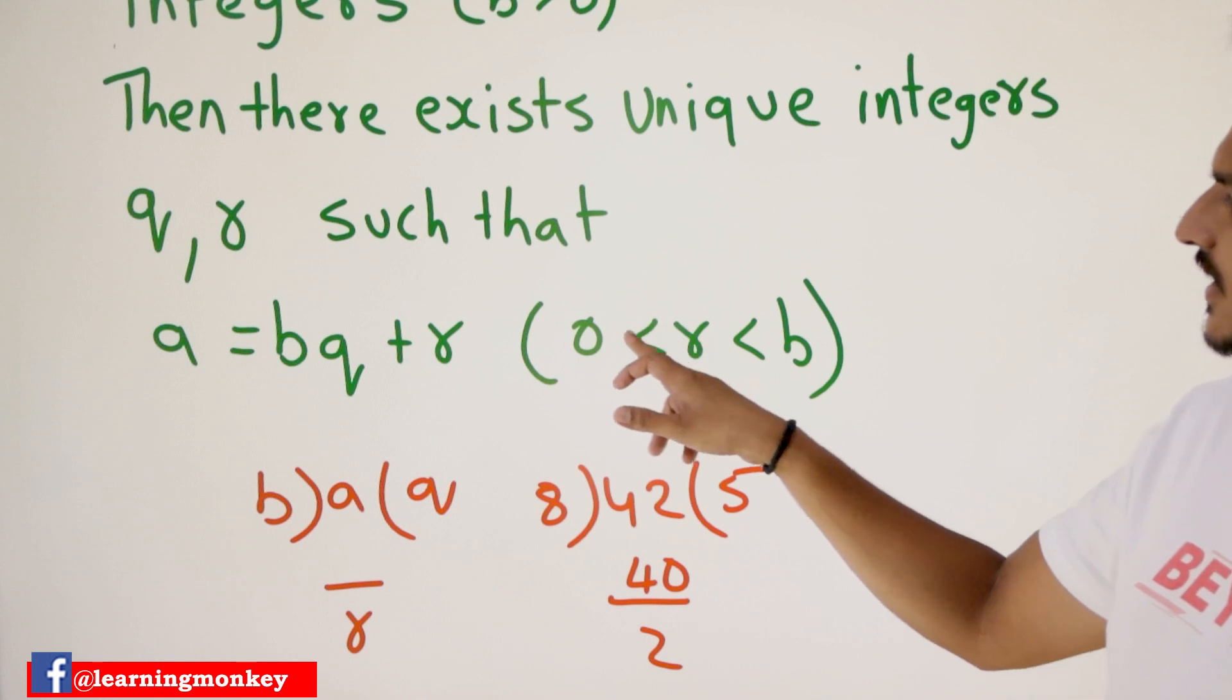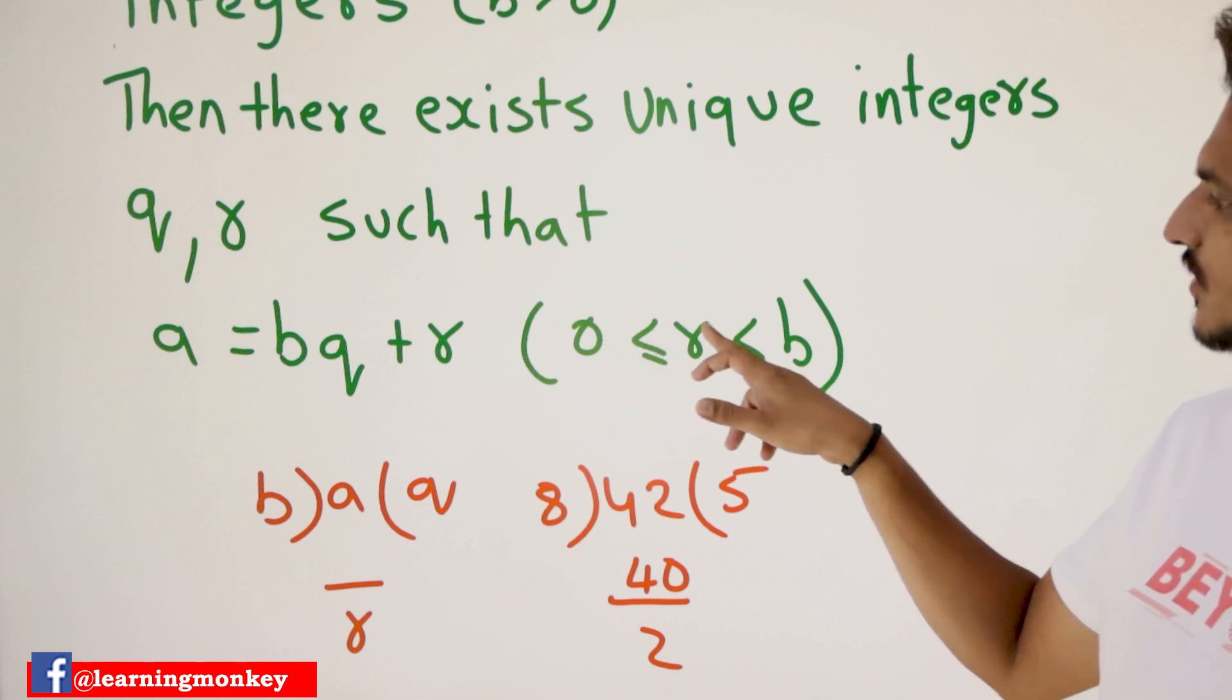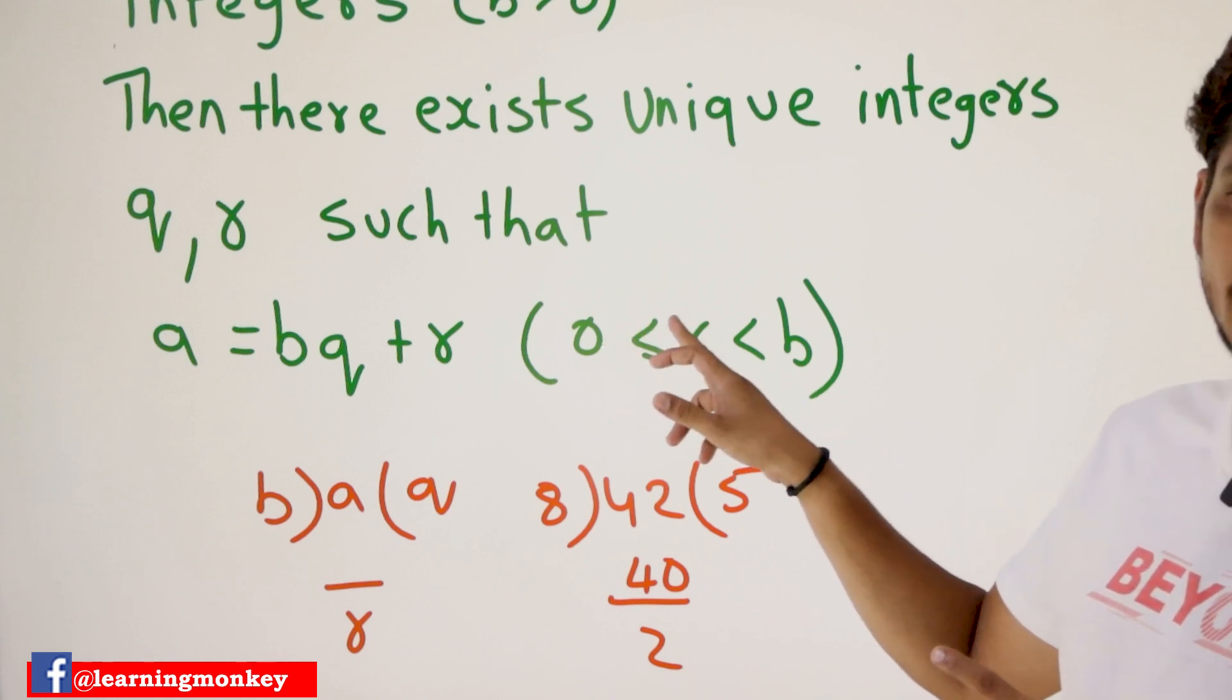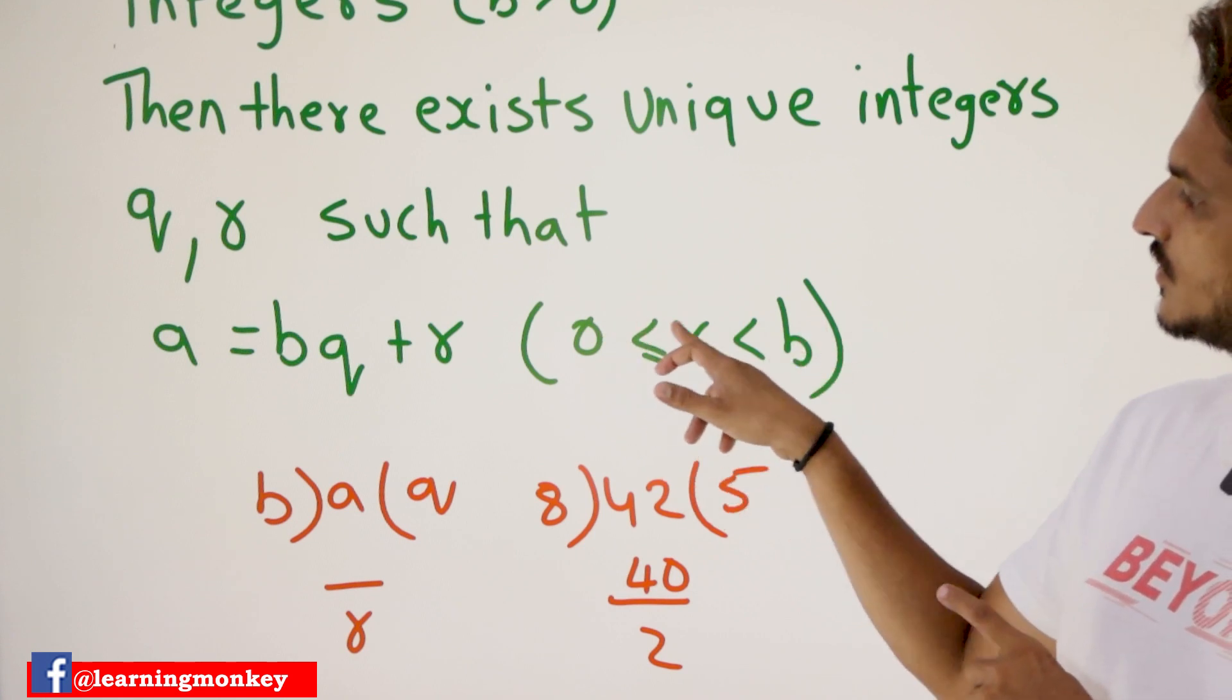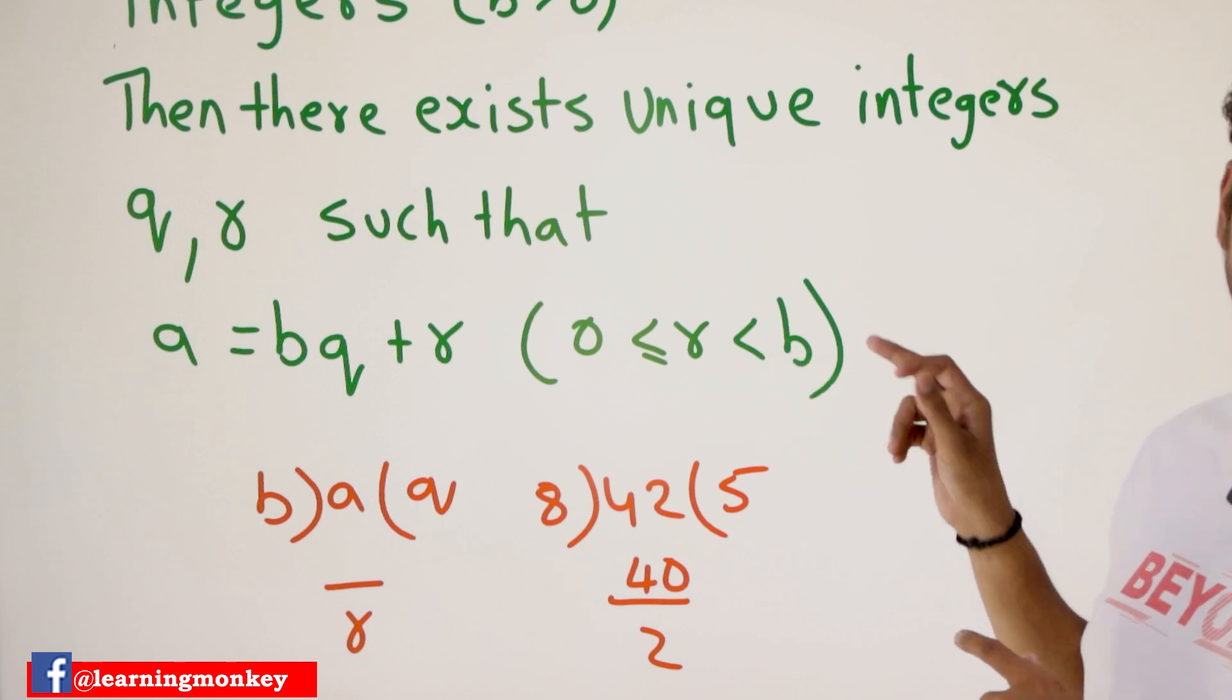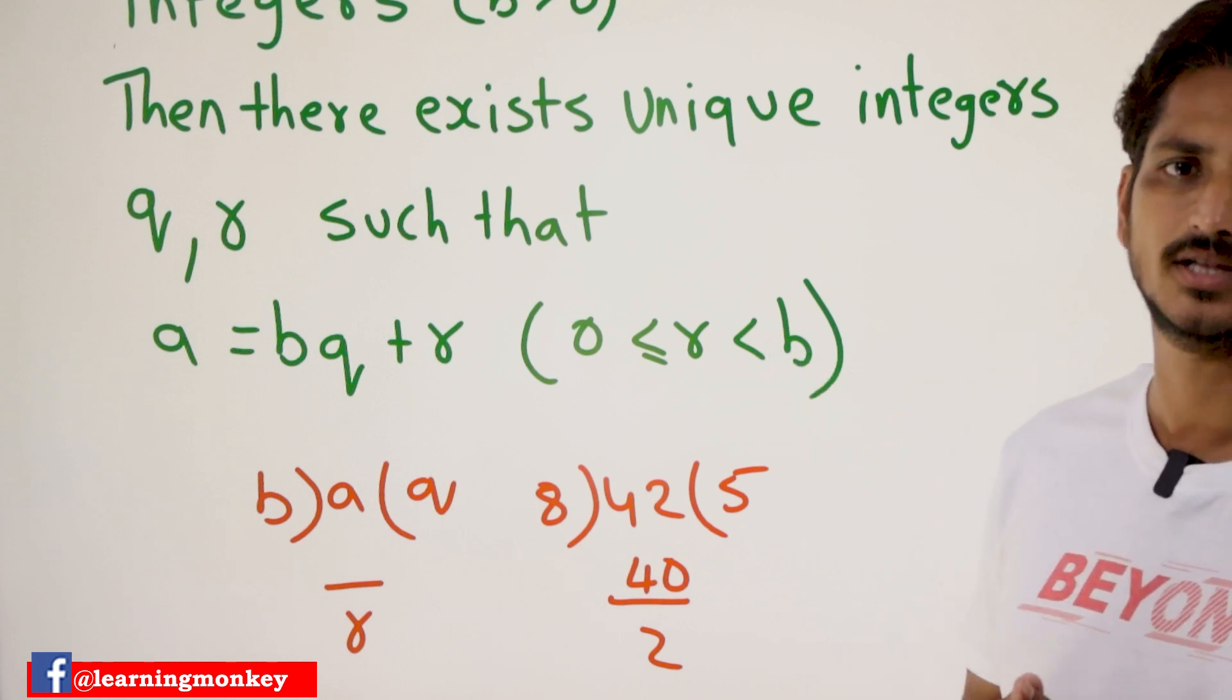And where R is always less than or equal to 0, R lies between 0 and B, means less than B. 0 less than or equal to R less than B. It is satisfying that condition.